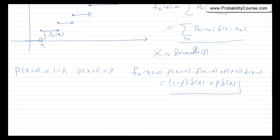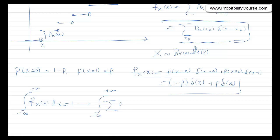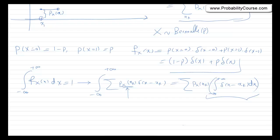Does the integral from minus infinity to plus infinity of f_X(x) dx always equal 1? We have the integral of the sum of p_X(x_k) delta(x minus x_k). Assuming X takes finitely many values, we can write this as the sum of p_X(x_k) times the integral of delta(x minus x_k) dx. The area under the delta function equals 1, so this becomes simply the sum of p_X(x_k), which equals 1. That makes sense.